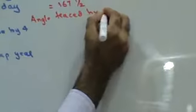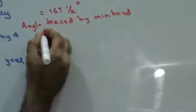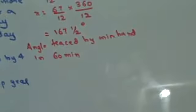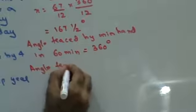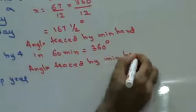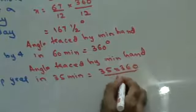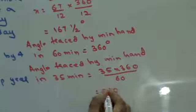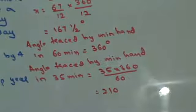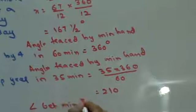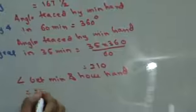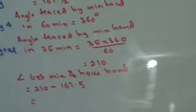Now let's find the angle traced by the minute hand. In 60 minutes the minute hand traces 360 degrees. So in 35 minutes it traces 35 × 360/60 = 210 degrees. The hour hand has covered 167.5 degrees, the minute hand 210 degrees. The angle between them is 210 − 167.5 = 42.5 degrees.